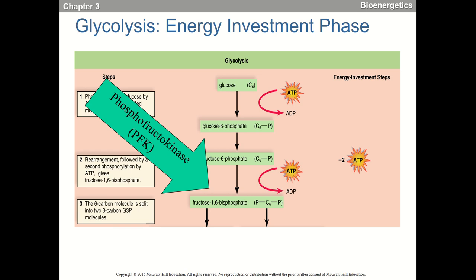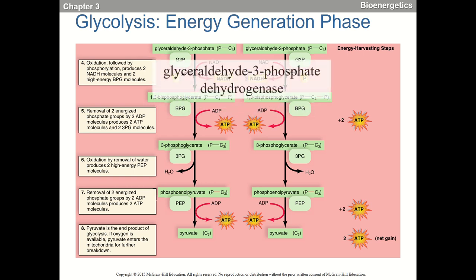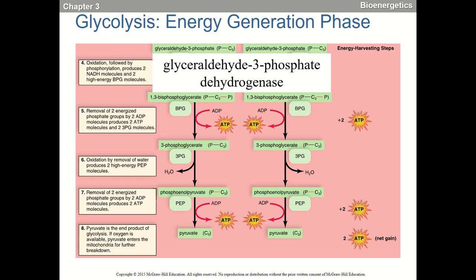In the energy generation phase, the big things to know: glyceraldehyde 3-phosphate — it's a dehydrogenase reaction because we're taking a hydrogen off of glyceraldehyde 3-phosphate and putting it on the electron carrier NAD to make NADH. That NADH will go to the mitochondria to generate more ATP. The enzyme is glyceraldehyde 3-phosphate dehydrogenase — G3PDH is a good acronym.